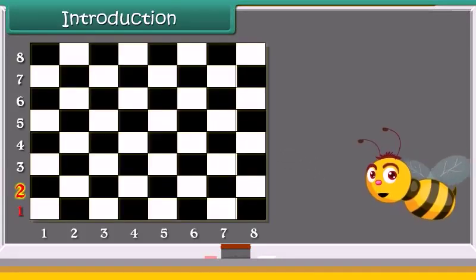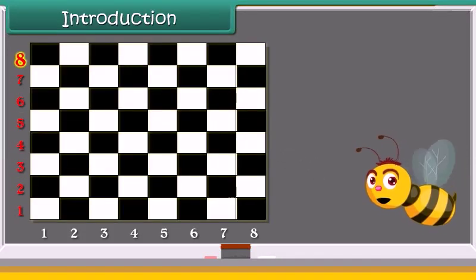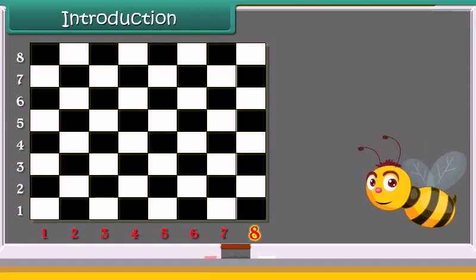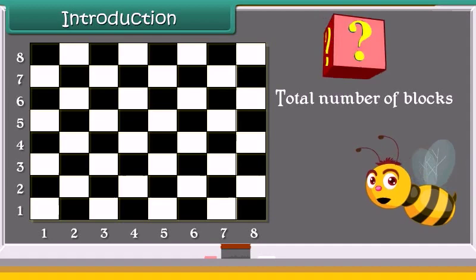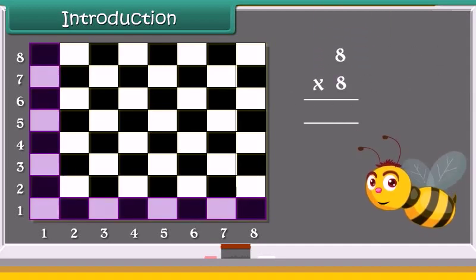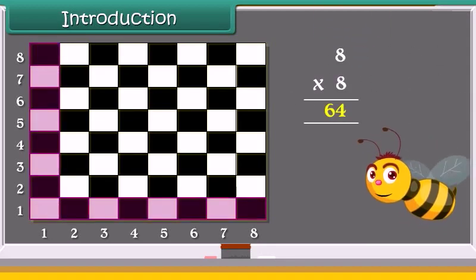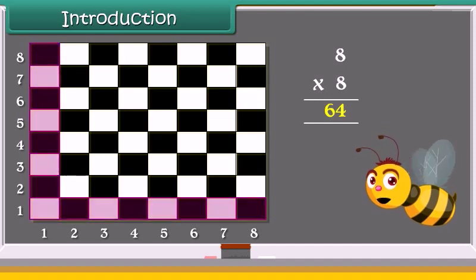Introduction: A chess board has 8 rows and 8 columns. Can you tell the total number of blocks in the board? Yes, we can calculate by multiplying both the numbers. Let's study about multiplication.